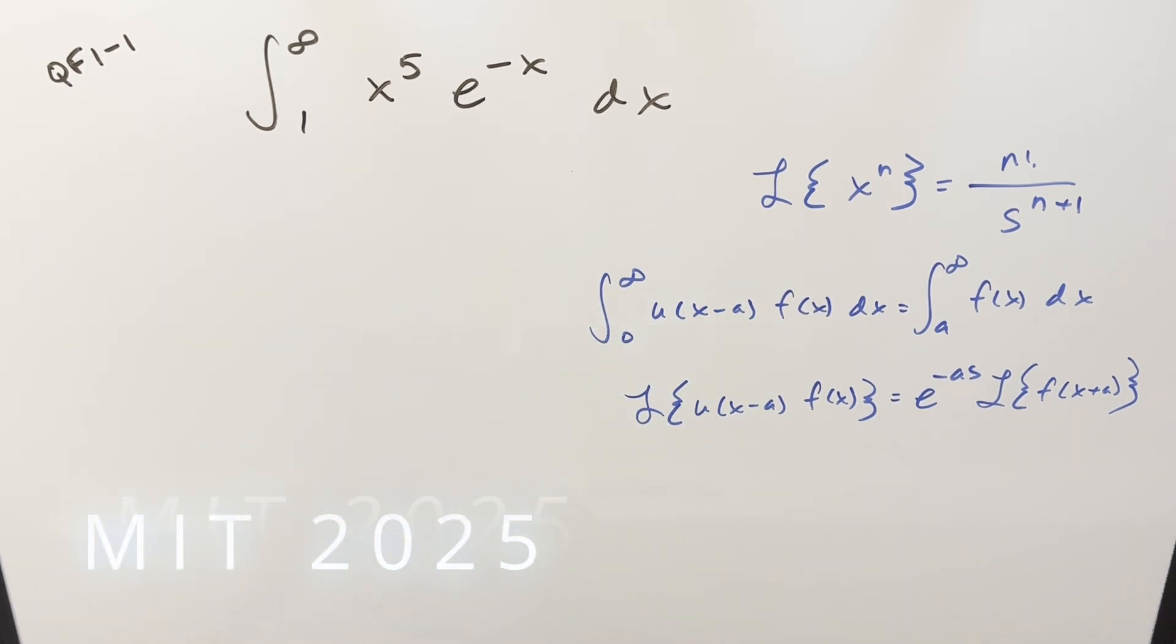We've got another interesting integral from the MIT Integration Bee 2025 quarterfinals 1-1. We have the integral from 1 to infinity, x to the 5th, e minus x, dx.